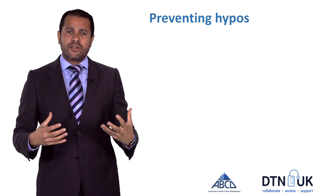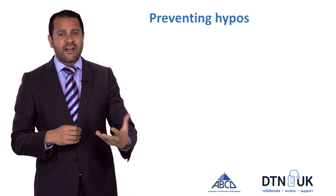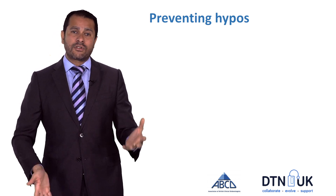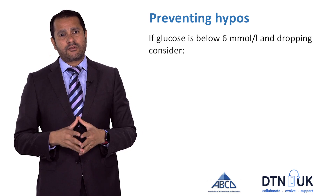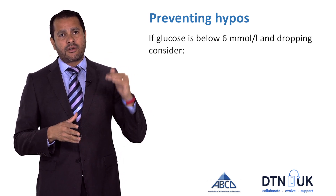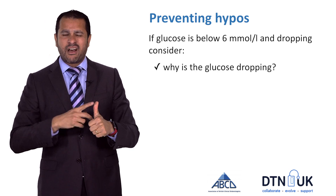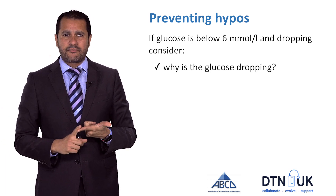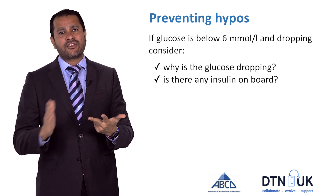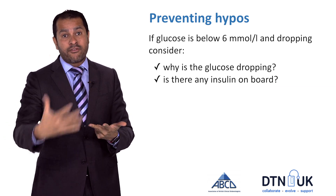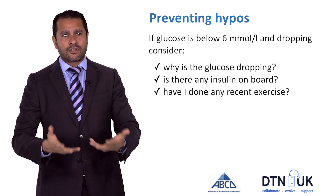With CGM, of course, you get much more warning about hypoglycemia, but it's very easy to overreact to that. So how do you prevent hypoglycemia without causing hyperglycemia? If you see a blood glucose dropping and you're below 6 mmol per litre and the arrow on your CGM device is showing a downward trend, it might be worthwhile thinking: why is it dropping? Have I done some exercise? Have I taken a big correction dose? Is there any insulin on board — that is, have I taken a shot of quick-acting insulin in the last two to three hours, which is still likely to be driving my glucose down for the next hour? And finally, have I done some recent exercise that has caused the glucose to drop further?